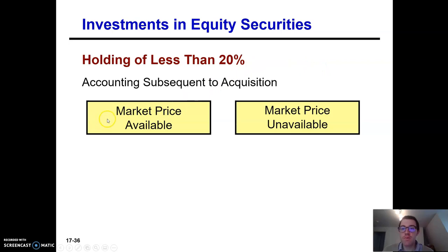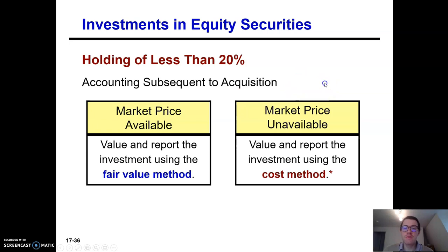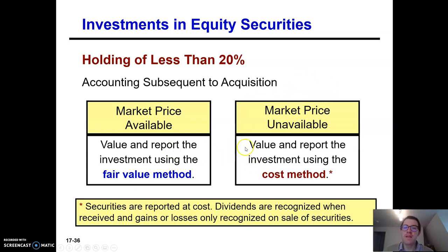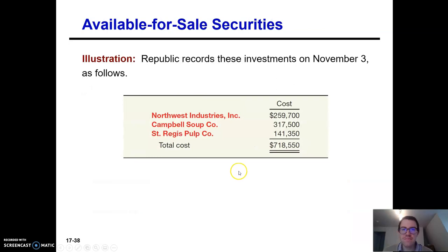If you have less than 20% and the market price is available subsequent to acquisition, you use the fair value method. Very rarely will the market price be unavailable — if it is, you use the cost method. If a stock is traded on a public exchange, the price is usually available. So let's say Republic Corporation buys common stock of three companies on November 3rd. Each of these investments represents less than 20% interest, so we can safely assume they don't have significant influence. These are all available for sale. At the time we buy the investments, we debit the equity investment account for the total and credit cash.